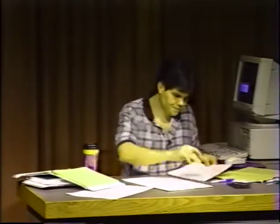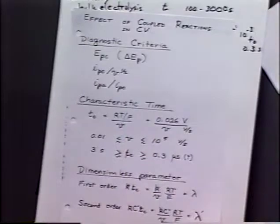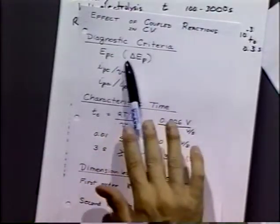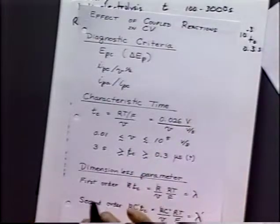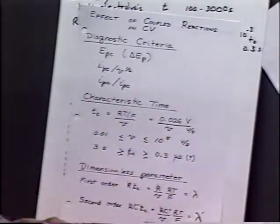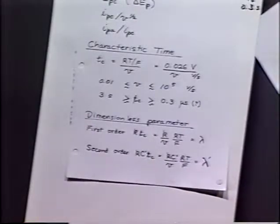Let's go through the handout for various processes, starting with the first page. The handout begins with our diagnostic criteria, covering peak currents as a function of scan rate and the ratio of the anodic to cathodic peak current. We've discussed these before. We can normalize the cathodic peak current by the square root of the scan rate. For a reversible reaction with no chemical step, that ratio should be constant, so deviations indicate a chemical process.